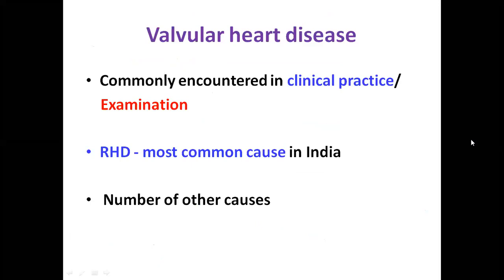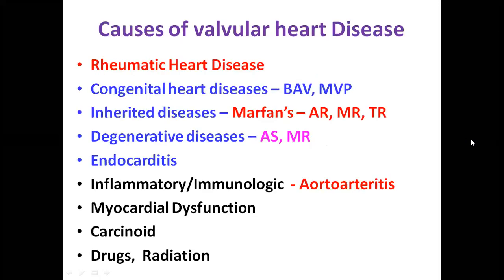Valvular heart disease is commonly encountered in day-to-day clinical practice as well as long cases in DM exams. Rheumatic heart disease is the most common cause. Other causes include congenital heart disease like bicuspid aortic valve, Marfan syndrome presenting with AR or MR, degenerative disease — a very common cause of aortic stenosis in the elderly — endocarditis especially right-sided causing severe tricuspid valve regurgitation, rheumatoid arthritis causing MR and AR, myocardial dysfunction causing MR, and rare causes like carcinoid, drugs, and radiation.